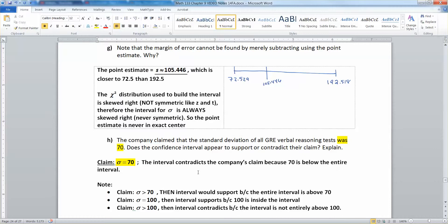If they claim greater than 70, that would be this one. If they claim it was 100, that would be the next one. If they claim greater than 100, less than 100, you're going to have to pay really close attention to the words that they're using. And the words that they're using will give you their claim. And then you determine whether your interval supports that.